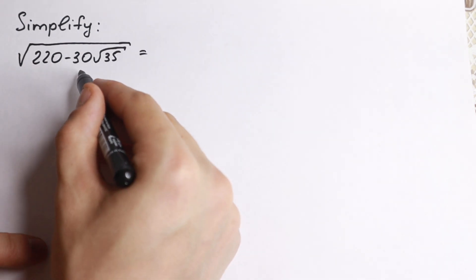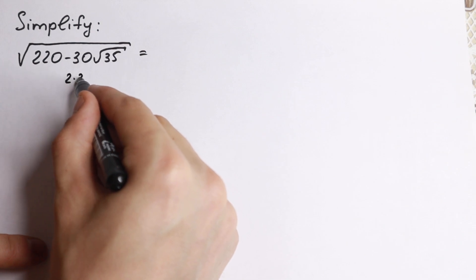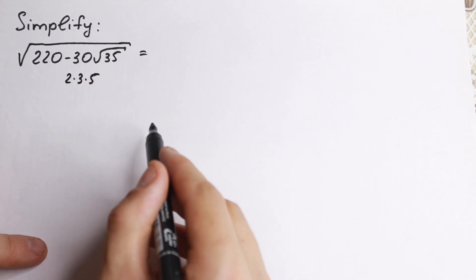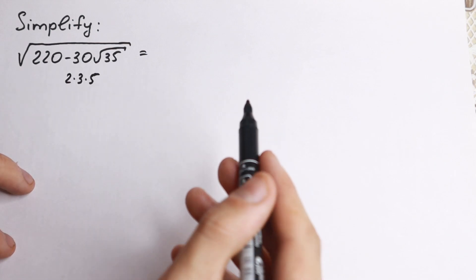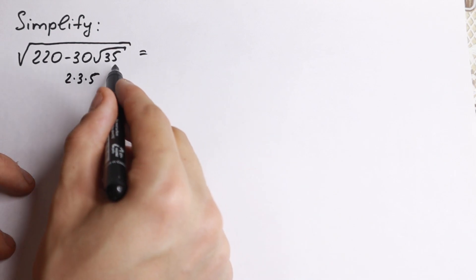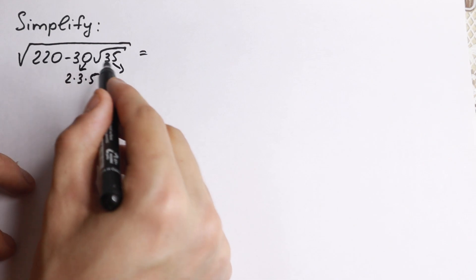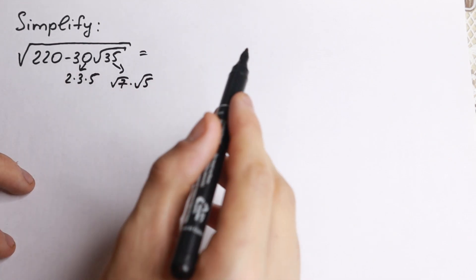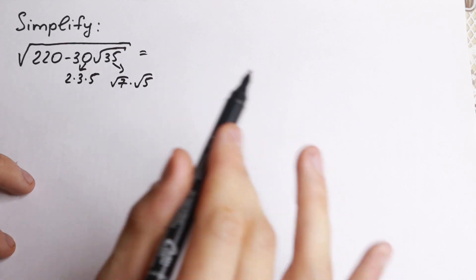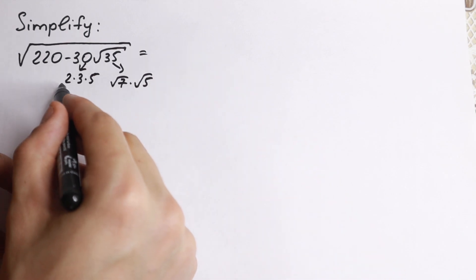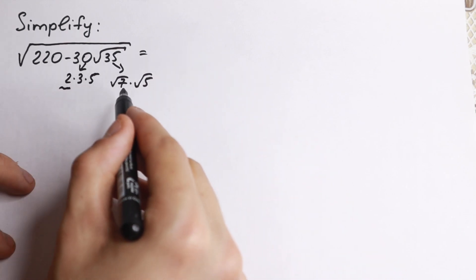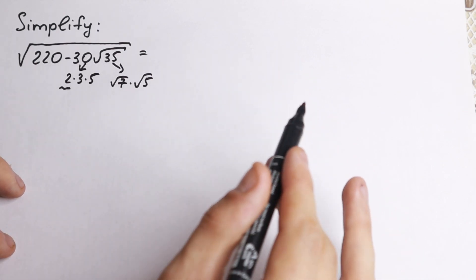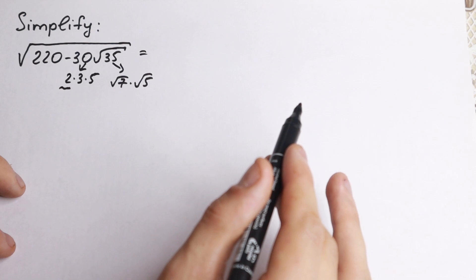First of all, let's rewrite 30 as 2 times 3 times 5. We can do this because 3 times 5 equals 15, and of course we can do this. And let's rewrite this 35 as square root of 7 times square root of 5. So right here we have 2, we have 3 times 5, and 7 times 5 — so we have this expression right now.